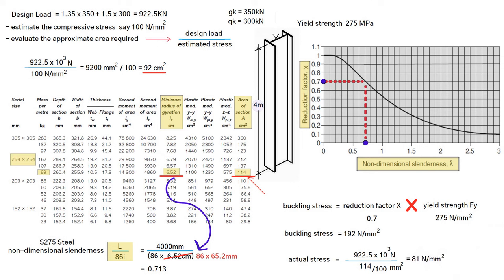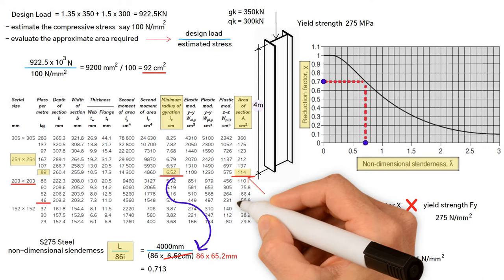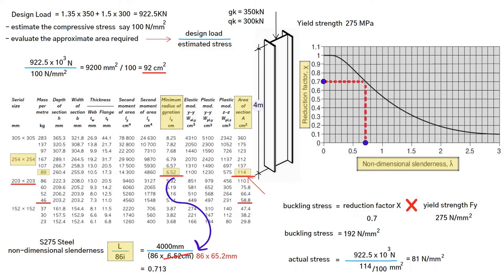The above column would be safe, but not very economic as the loads produce a stress which is less than half the compressive strength of the column. It is worth trying a smaller section in this case. You should try 203 by 203, 46 kilogram per millimetre universal column and comment below with your findings.